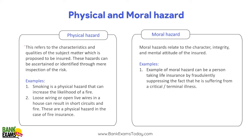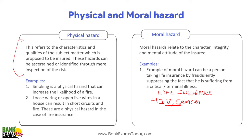Physical hazard refers to characteristics and qualities of the subject matter proposed to be insured, which can be identified through mere inspection. Smoking is a physical hazard that can increase the likelihood of a fire; loose wiring can cause a short circuit. Moral hazard refers to a person's character — integrity issues. For example, a petrol pump owner instructing employees to set a fire to claim insurance — that is moral hazard. Also, if a person takes a large life insurance policy and hides that they have HIV or cancer from the insurance company, that is a moral hazard.